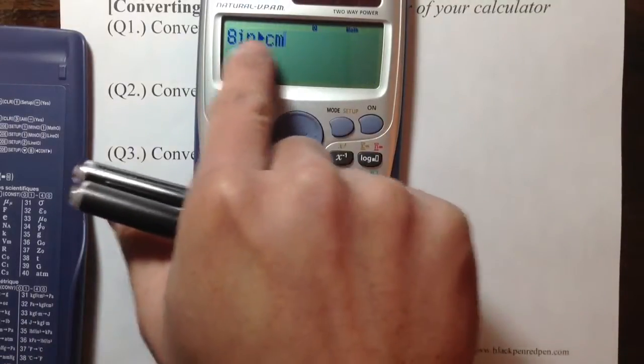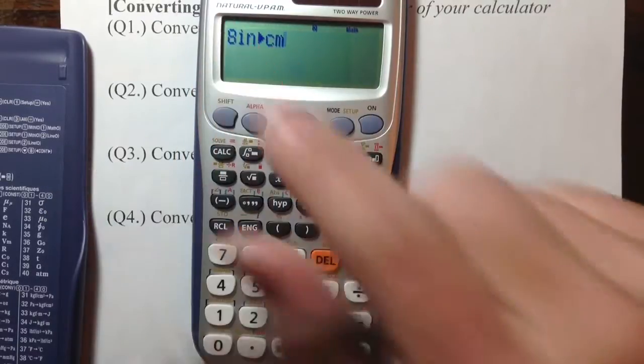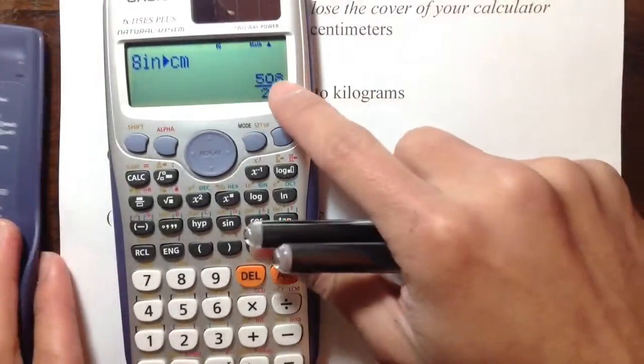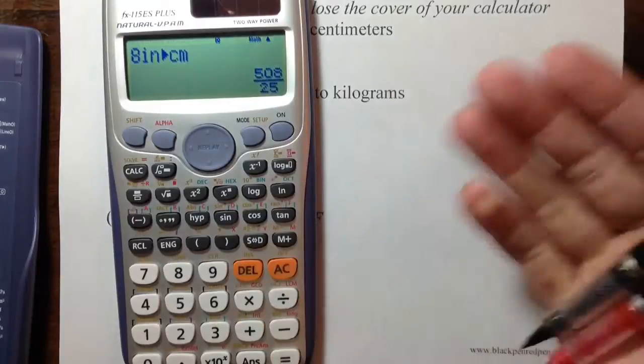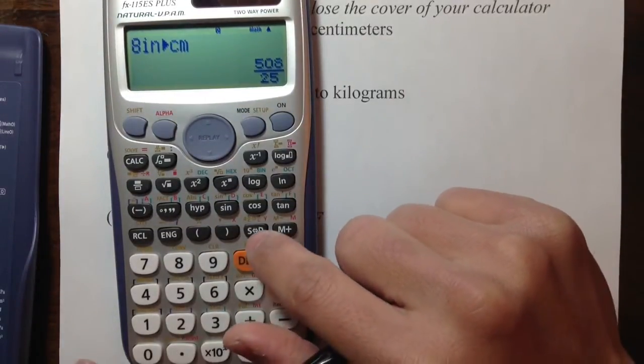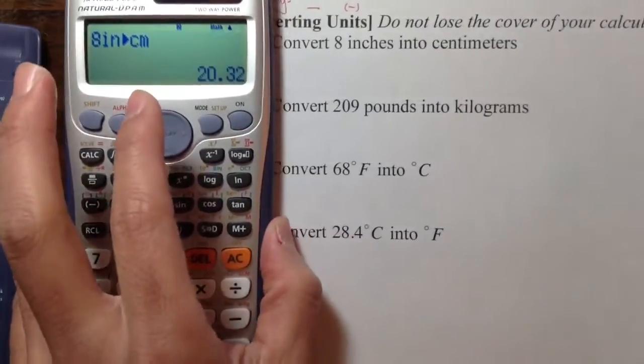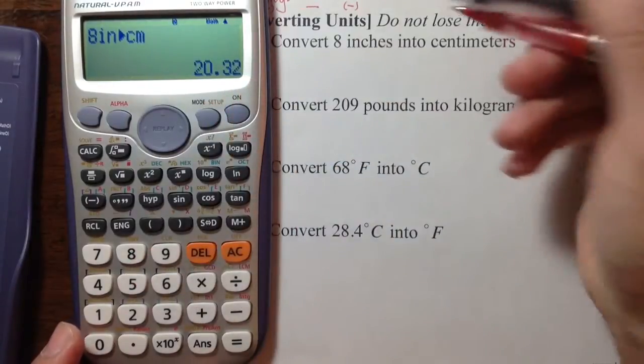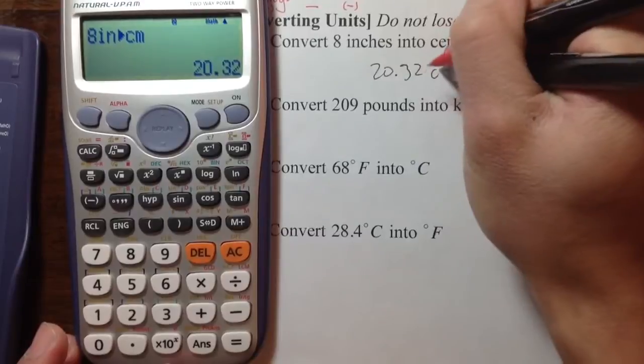Then on the calculator, it shows that it will convert 8 inches into centimeters for you after you hit equal. So we get a fraction, 508 over 25. Usually when you're dealing with these questions, we want to use decimals. So press S to D. In other words, 8 inches is equal to 20.32 centimeters.